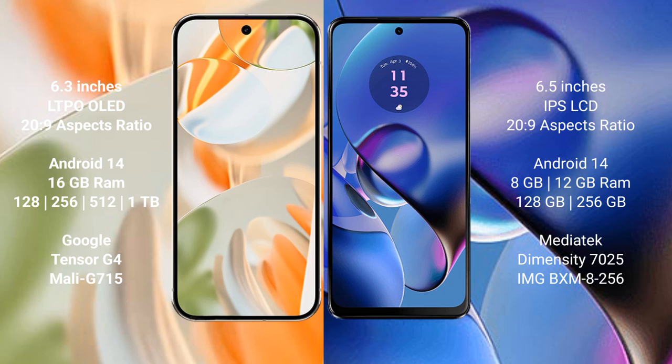Both the Google Pixel 9 Pro and the Motorola Moto G64 run on the Android 14 operating system. The Google Pixel 9 Pro comes with 16GB RAM and 128GB, 256GB, or 512GB, up to 1TB of internal storage.